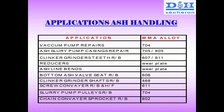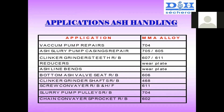Other applications include vacuum pump repairs, ash slurry pump casing repair, and clinker grinder — clinker grinder is essentially ash grinding. Reducers, ash line bends — normally there is wear and tear that takes place. Screw conveyor and slurry pump pulley are also common applications.